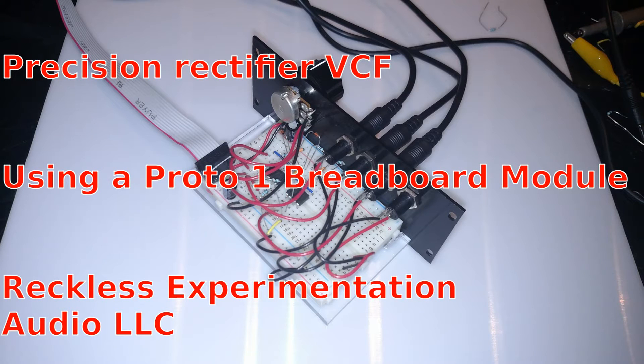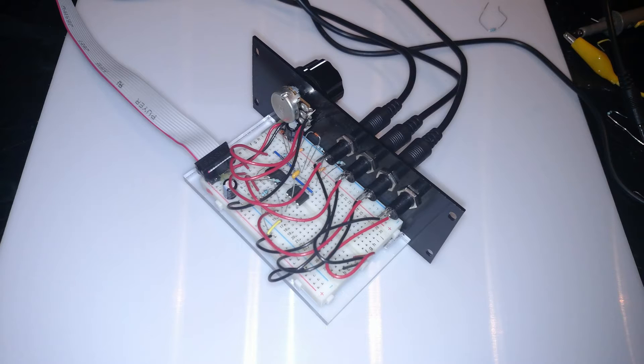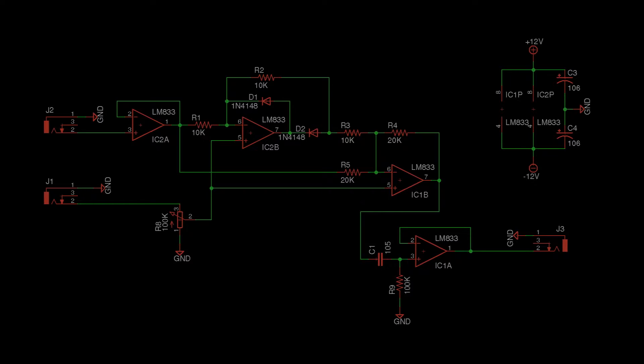Today we are going to make a voltage controlled filter based around a precision rectifier using a Reckless Experimentation Audio Proto-1 Eurorack breadboard module. The parts list and circuit schematic is in the description below.